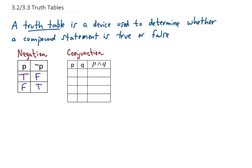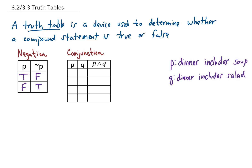That first example is a little bit unsatisfying, so let's look at a conjunction truth table. So we have something concrete to talk about: let's say that the statement p is 'dinner includes soup,' and the statement q is 'dinner includes salad.' Now in the columns for p and q, we're going to list all of the possible truth values — p true and q true, p true and q false, p false and q true, or p false and q false.